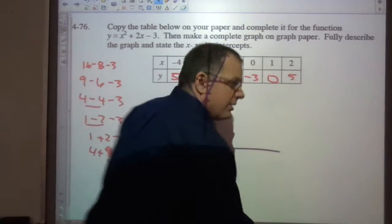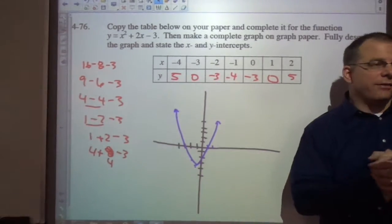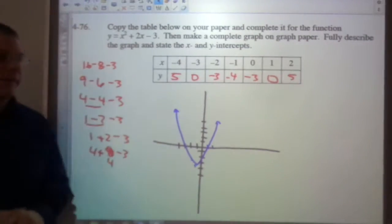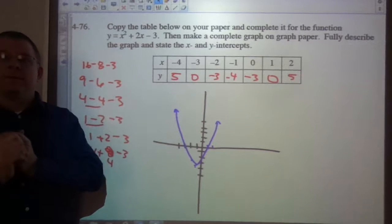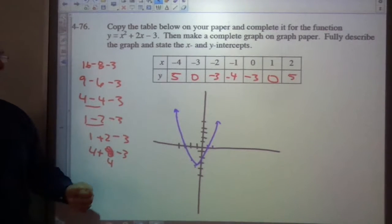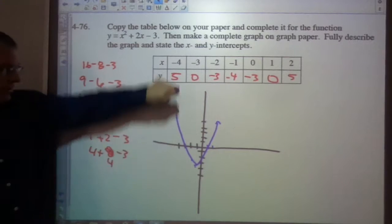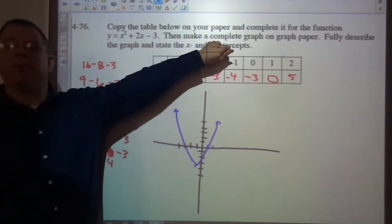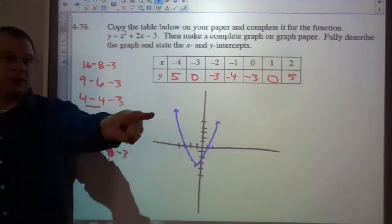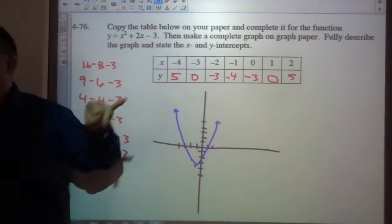So now let's talk about it. It says to fully describe the graph. Here's where I'm going to pick on the class. Who can tell me something about this graph that's important? It is continuous. It is not discrete, right? Because we're not picking up our pencil. It's going the whole way. Good. You said it was a parabola. The shape is a parabola. Great.